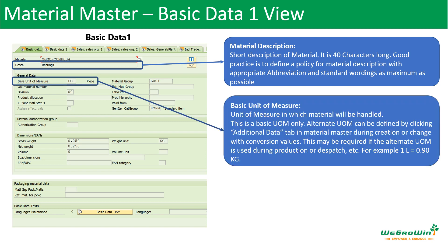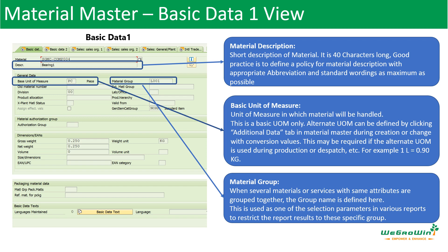Next is the basic unit of measure. This is the unit of measure in which the material will be handled — the basic unit of measurement only. There may be different units of measurement: for purchasing, there may be another unit of measurement; for production, there may be another; or for sales, there may be another. All these things will be defined in the additional data view. From the basic data view itself, on the top if you click, there is an additional button where we can go and define the alternate unit of measure details. And then there is material group.